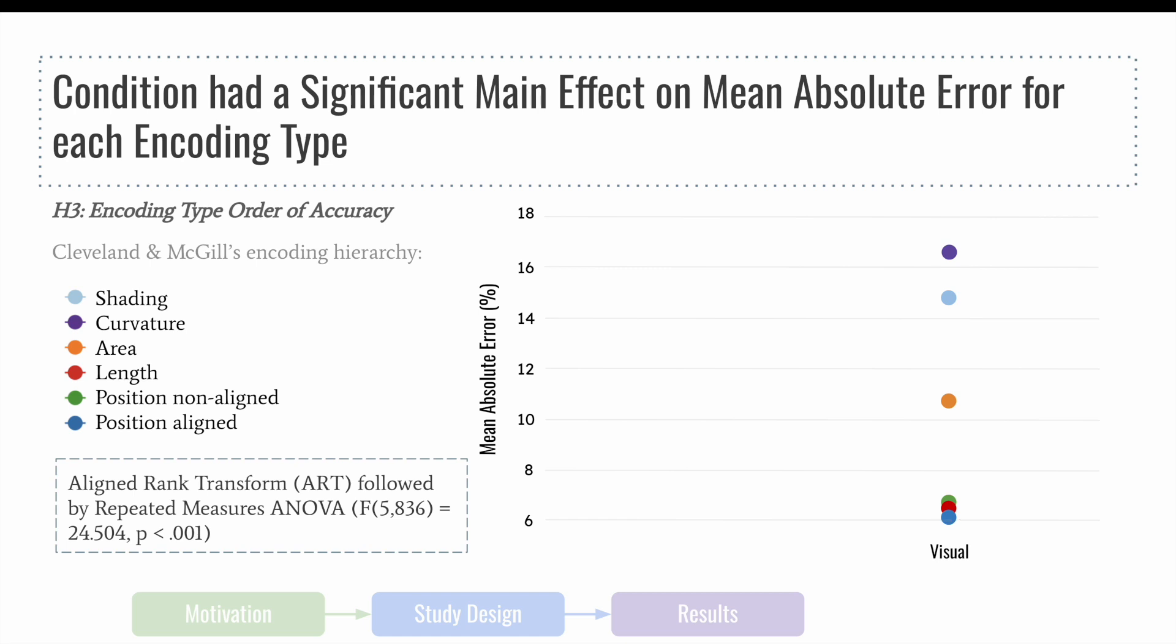In contrast, we saw a more drastic deviation from Cleveland and McGill's order in the tactile condition. Participants were the most accurate at judging proportions when data was encoded using length. This was followed by position non-aligned, then area. Surprisingly, the visual condition's most accurate encoding type, position aligned, occurred fourth in the tactile perceptual hierarchy.